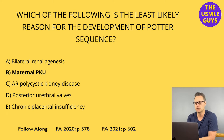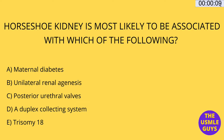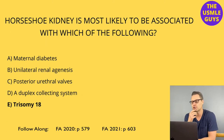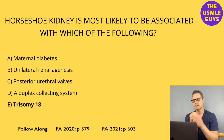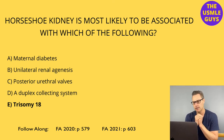Let's do another multiple choice question. Go ahead and hit that pause button, figure this one out, and then come on back when you think you have the right answer. The correct answer here is E. Something really important to keep in mind when it comes to the horseshoe kidney is that it is more likely to happen in someone who has a chromosomal aneuploidy.